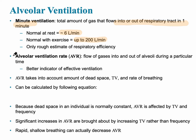The alveolar ventilation rate is the flow of gases in and out of the alveoli during a particular time. It is a better indicator of effective ventilation because it takes into account the gases actually reaching the alveolus — accounting for dead space, tidal volume, and the rate of breathing.